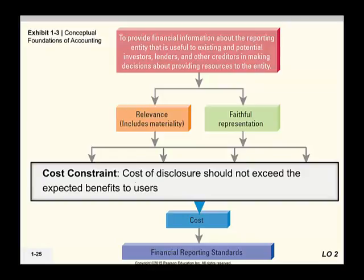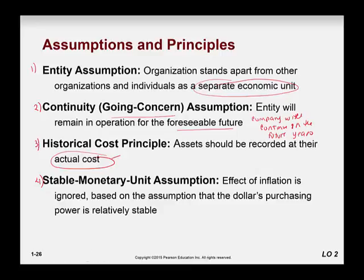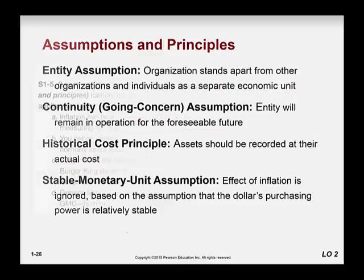The cost constraint, as I mentioned earlier, means the cost should not exceed the benefits — if the cost is less than the benefits provided, then it is worth preparing. We have four assumptions surrounding our financial statements: First, an entity is a separate economic unit. Second, the going concern assumption means the company will continue to exist within the next year and into future years. Third, the historical cost principle means we record everything at cost, though in higher-level classes we may record items at fair market value. Fourth, the stable monetary unit assumption means inflation is ignored and the dollar's purchasing power is assumed to remain stable.